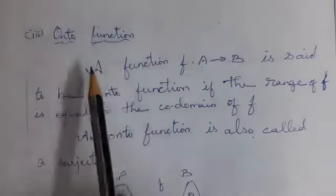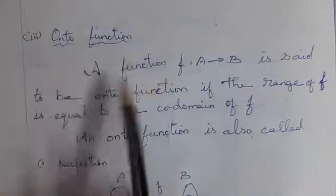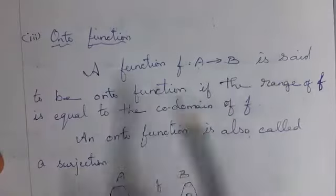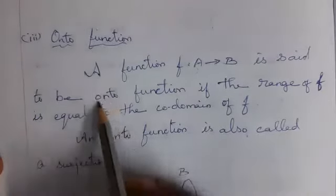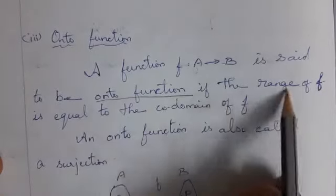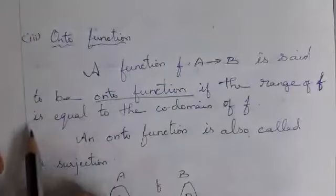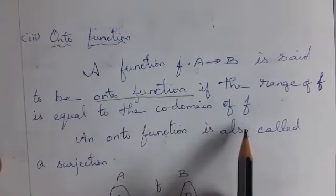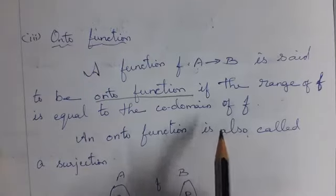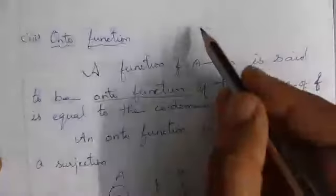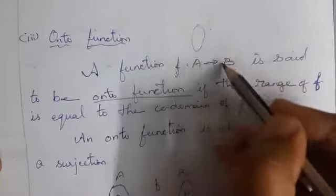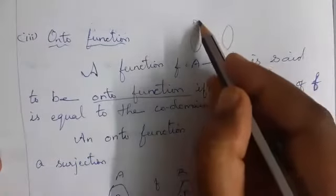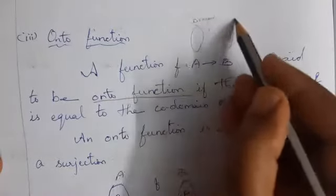See the third one: onto function. A function f from A to B is said to be an onto function if the range of f is equal to the co-domain of f. Set A is the domain, set B is the co-domain.